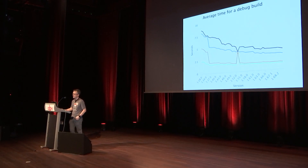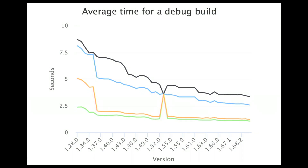Question: What happened between versions 1.52 and 1.55 where one of the lines on the chart spikes? I think that was one of the releases where incremental compilation was disabled due to bugs. The blue line, which is non-incremental, was unchanged, while the other three were different forms of incremental compilation.